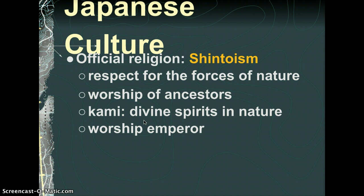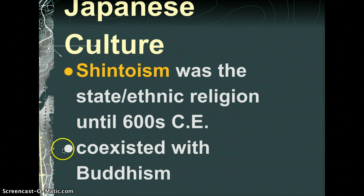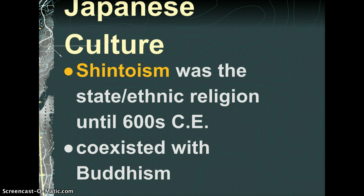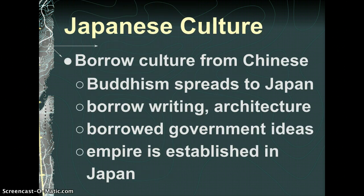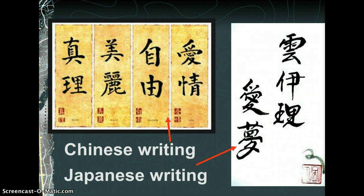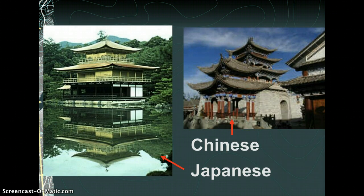They still have an emperor today, but the emperor doesn't have any formal power. Shintoism was the official religion — it's still the most practiced religion, and it coexists with Buddhism. Buddhism starts in India, goes to China, and then goes to Japan. And you're going to see how Japan and China have a lot of similarities: their writing, their architecture, and even ideas of how to rule their country.